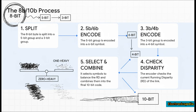In steps two and three, each of those gets its own special encoding — the five becomes a six and the three becomes a four. But here's where the magic happens in step four: the encoder takes a look at that running disparity. Is the link currently leaning positive with too many ones, or negative with too many zeros? Based on that answer, for the grand finale in step five, it chooses which version of the encoded symbols to use — the one that will push the balance back toward the middle. Then it stitches them together into the final 10-bit code and sends it on its way.